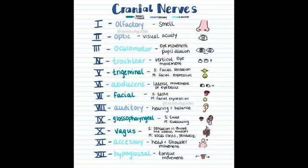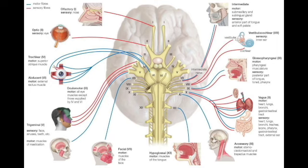Going through cranial nerves 1–12: CN1 is olfactory (smell). CN2 is optic — visual acuity, visual fields, pupillary light reflex; abnormalities include Marcus Gunn pupil or optic neuritis. CN3 is oculomotor — inferior rectus and ciliary body; dysfunction leads to dilated pupil. CN4 is trochlear — motor for the superior oblique rectus. CN5 is trigeminal — motor for mastication (closing jaw, moving chin side to side), and sensory via light touch across three divisions (ophthalmic, maxillary, mandibular); abnormality is trigeminal neuralgia.